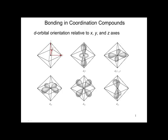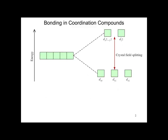Bonding and coordination compounds. Recall that the d-orbitals have the following shapes shown here. All are equal in energy in the absence of ligands. In an isolated transition metal atom, the five d-orbitals are degenerate in energy — they have the same energy.